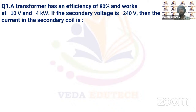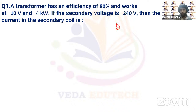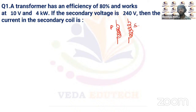Question number one: a transformer has an efficiency of 80% and works at 10 volt and 4 kilowatt. If the secondary voltage is 240 volts, then the current in the secondary coil is? In a transformer we have two coils — the primary coil and the secondary coil — and due to change in magnetic field for an AC current, there is an induced EMF in the secondary coil.